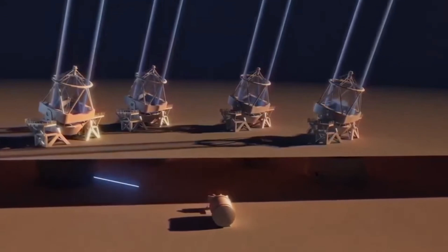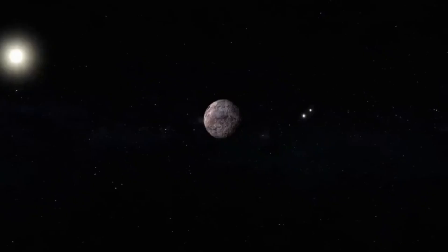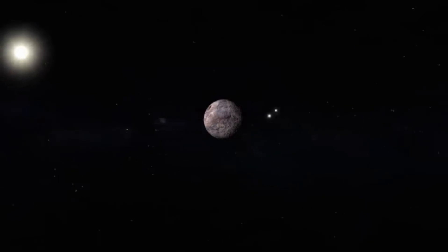However, we are getting close to when we might have to abandon our beloved planet. This brings us to Proxima b, the Earth-like planet orbiting Proxima Centauri that we might one day call home.